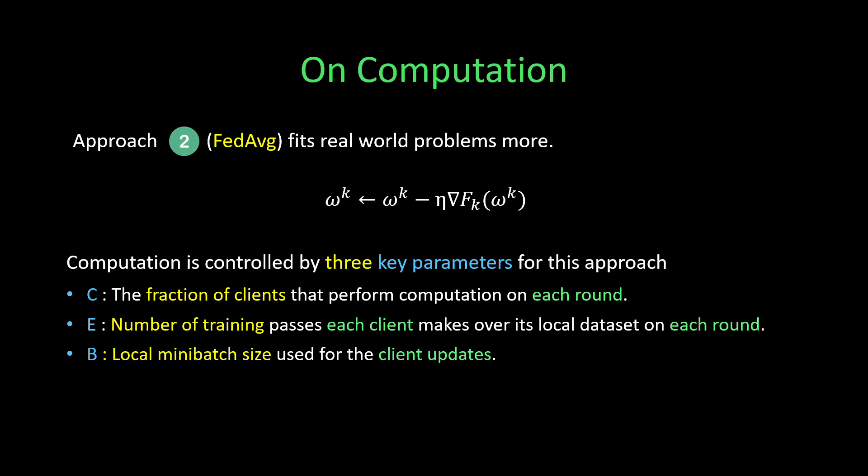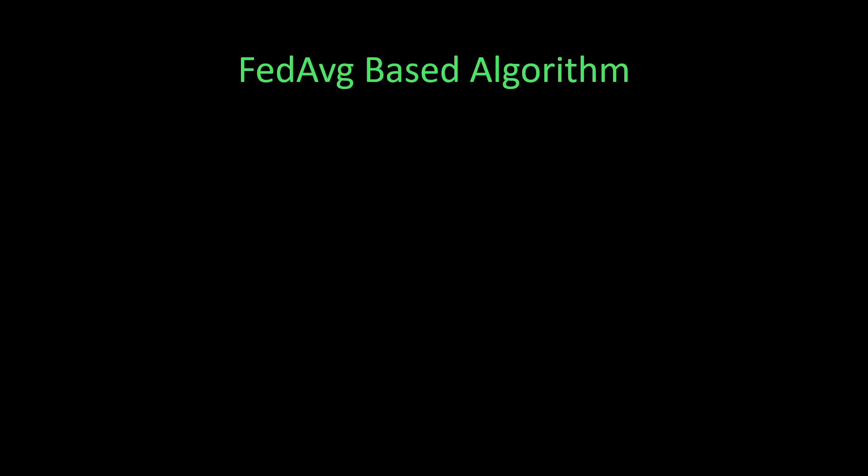The last one is B, the local minibatch size used for the client updates. We can summarize the algorithm as follows.